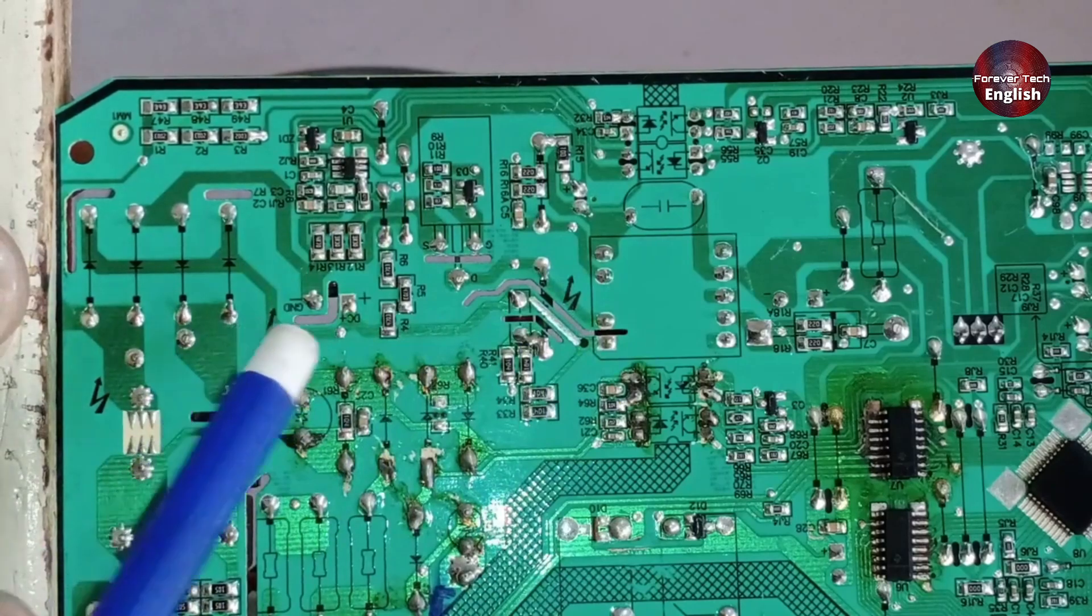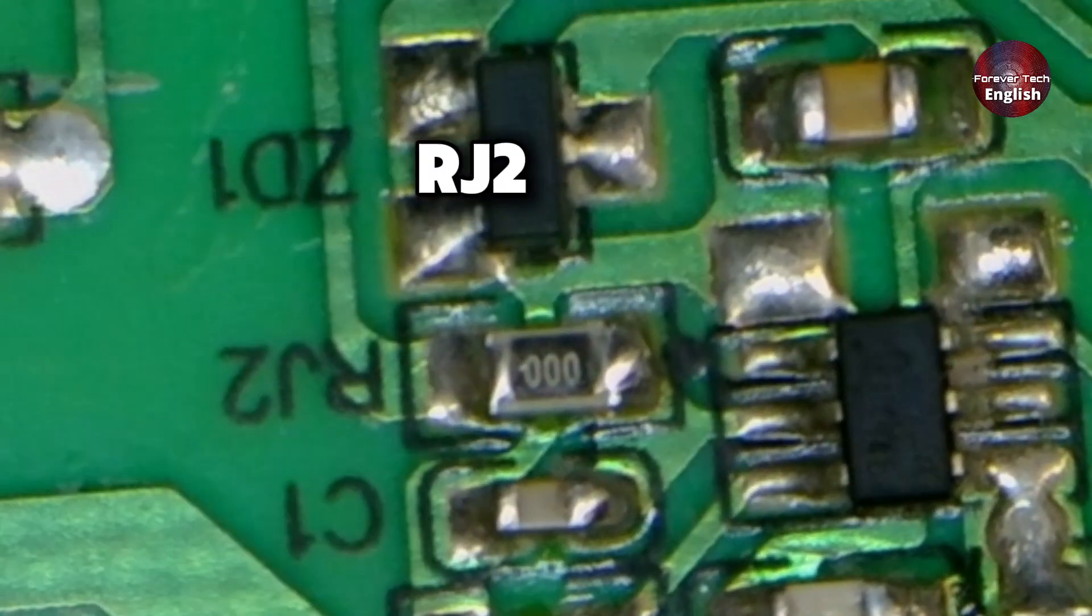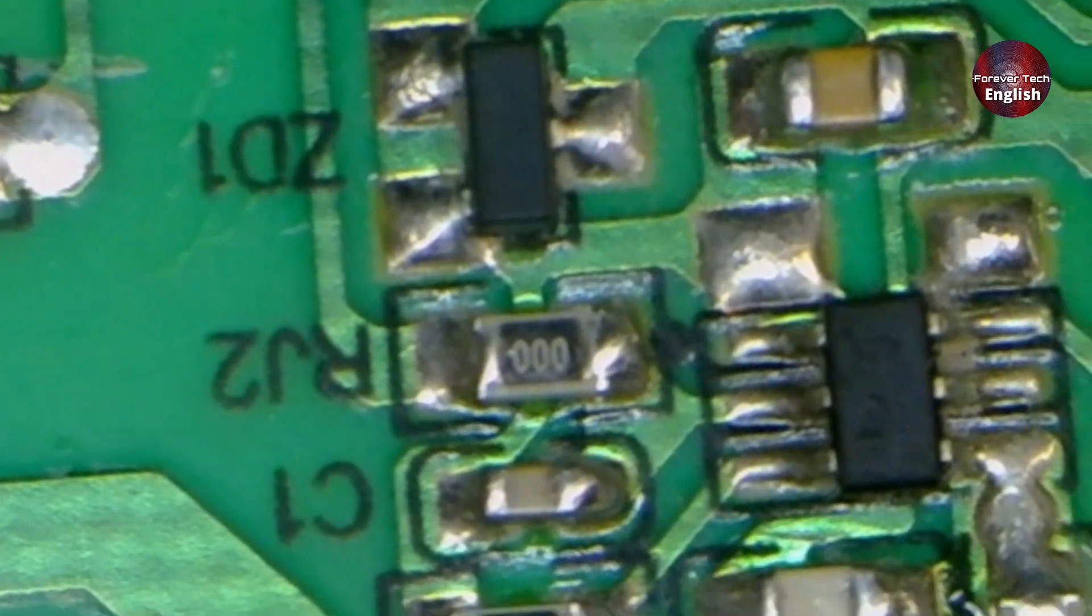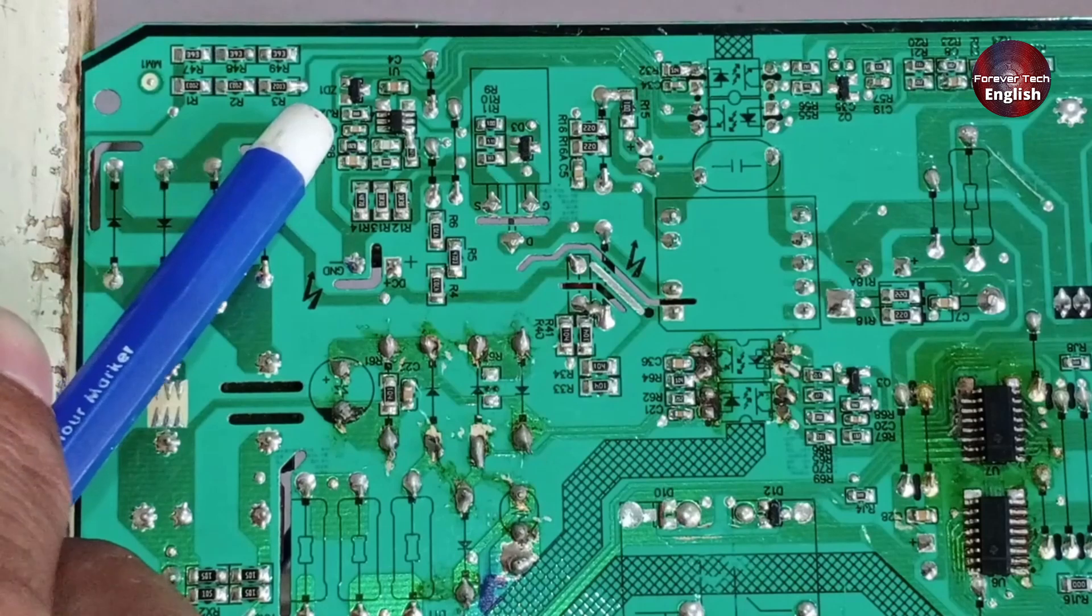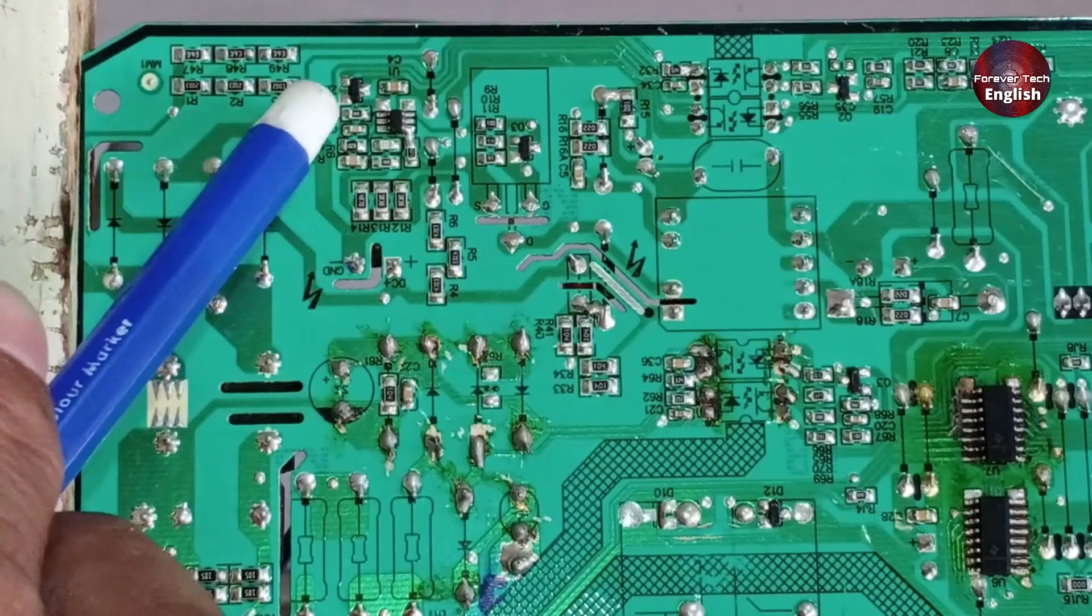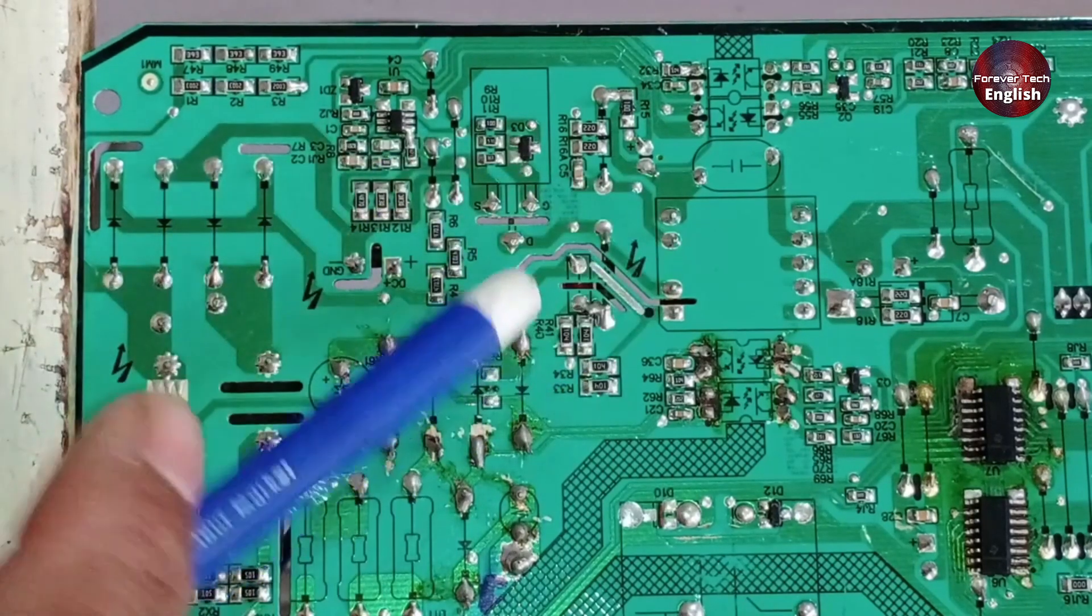However, if the system still doesn't turn on, check the resistance RJ2. If it is damaged for any reason, the system and SMPS will not work. Therefore, it is necessary to check it. If it is short-circuited or burnt, replace it. There are chances that the system will start working again.